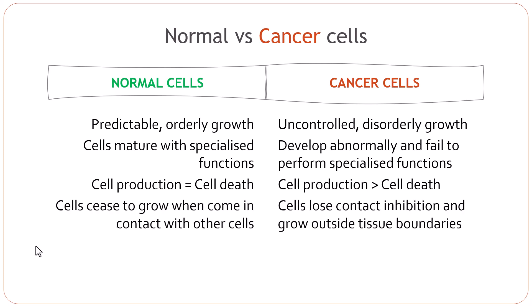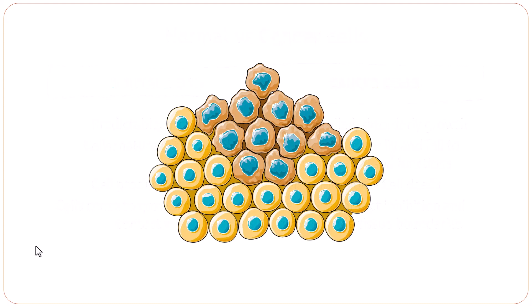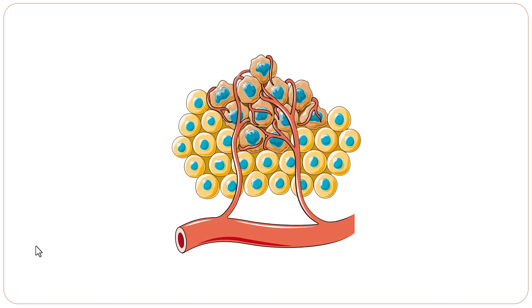Normal cells cease to grow when they come in contact with other cells — that is contact inhibition. But in a cancerous tissue, the cells lose this feature and they grow outside tissue boundaries. These cancer cells start secreting certain chemicals which allow blood vessels to grow towards them. These cells are growing without any control and need much more oxygen and nutrients, which is why they secrete these chemicals. So blood vessels will grow around these cells so they can draw nutrients from the blood.